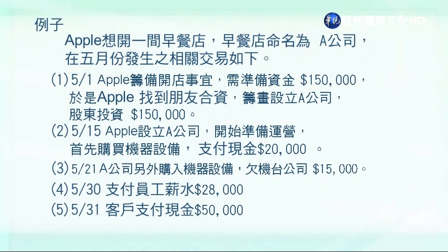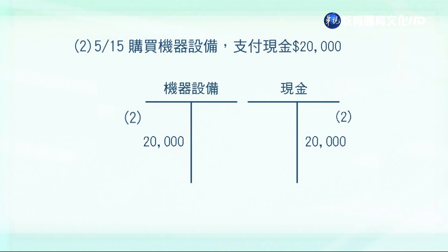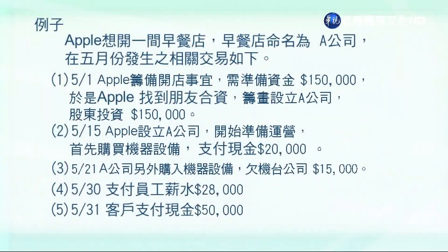5月15号，Apple设立公司后首先购买机器，花了两万块钱。这里资产有增加也有减少：增加的资产是机器设备买进来了，机器设备可以控制且未来能带来经济效益的流入，属于资产类，所以借方是机器设备；贷方是现金，因为付了现金，资产（现金）同步减少了两万块钱。